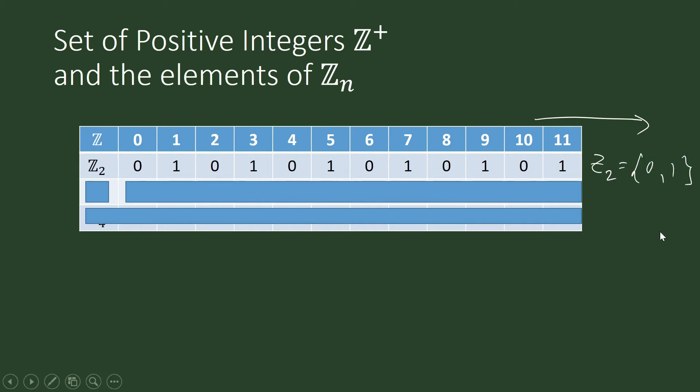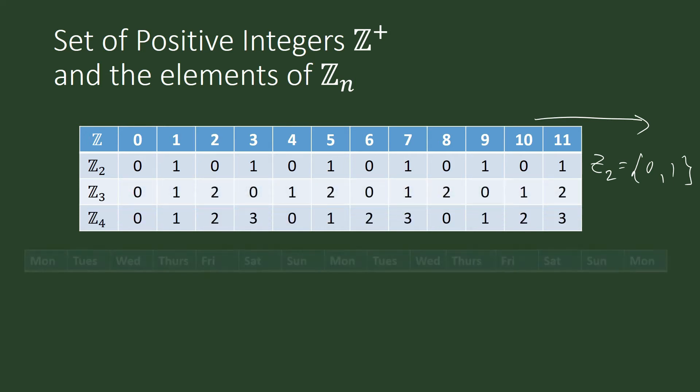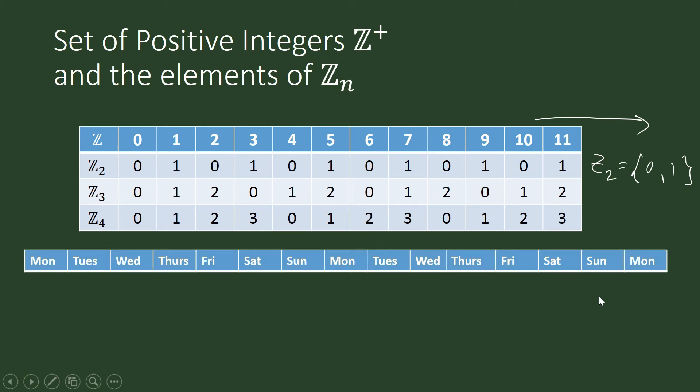So something similar happens with Z sub 3. These are the integers that appear as a result of modulo 3 arithmetic. So the remainders can be 0, 1, and 2. So this is how we do counting. So the difference between the set of integers and the set of integers that appear as a result of modulo n arithmetic is with the set of integers, we go on counting up to infinity. But with modulo n arithmetic, our counting is cyclic.